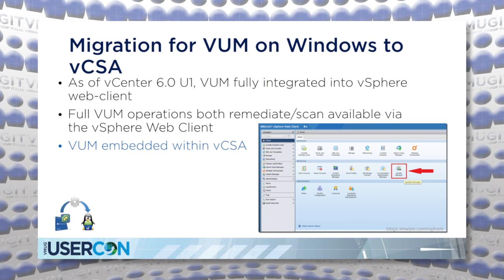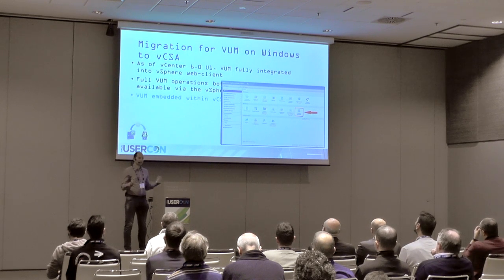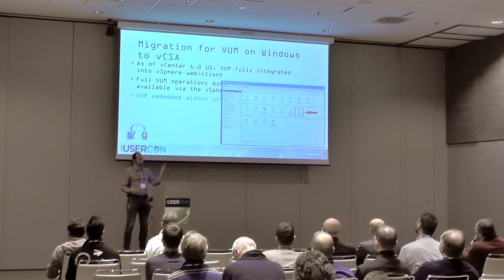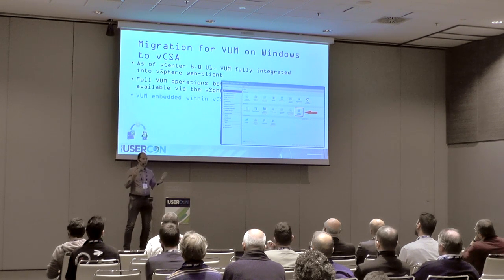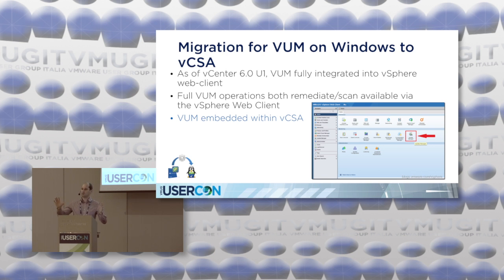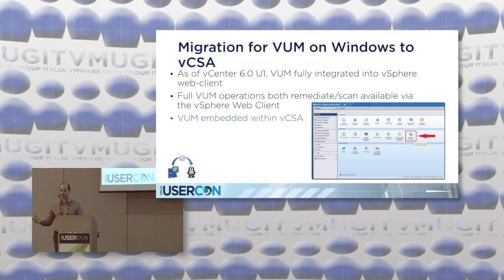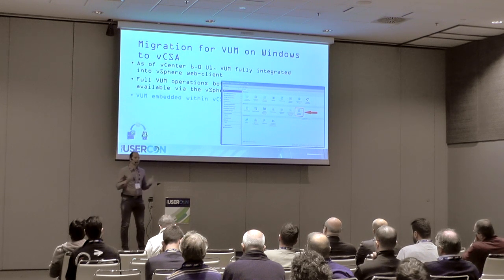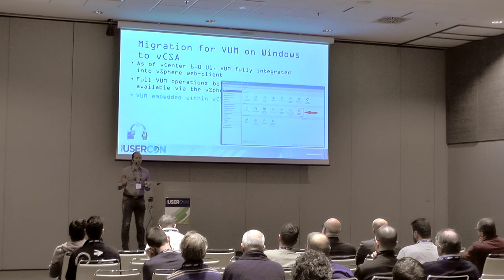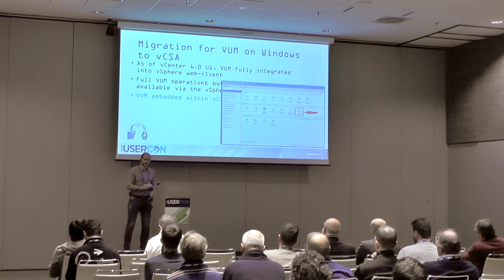VUM is now embedded within the VCSA. During migration, if you had VUM on a separate box from the Windows vCenter Server, we support that topology. You need to run the Migration Assistant on both appliances, and all data will be combined into one VCSA. One caveat: the Windows vCenter Server box will be shut down to preserve the networking identity. The VUM machine will be left running, so if you have third-party products installed there, you can leave them on.